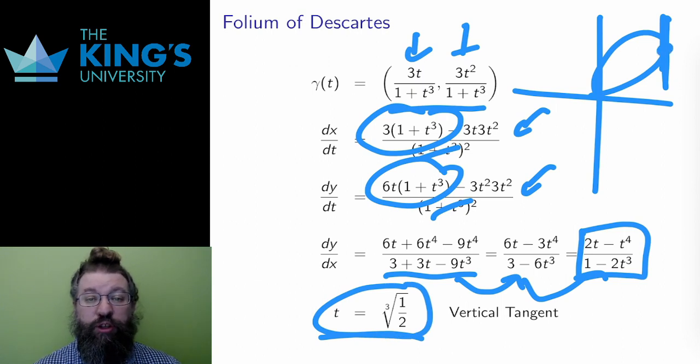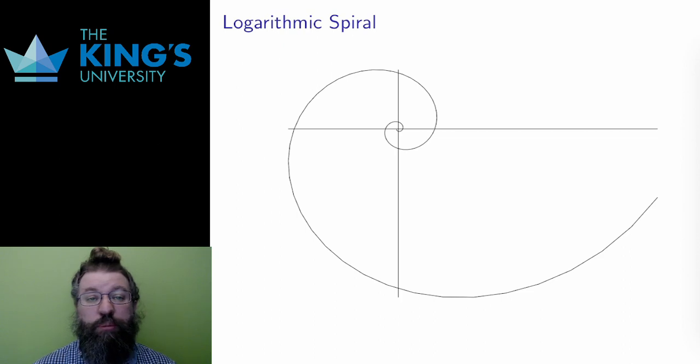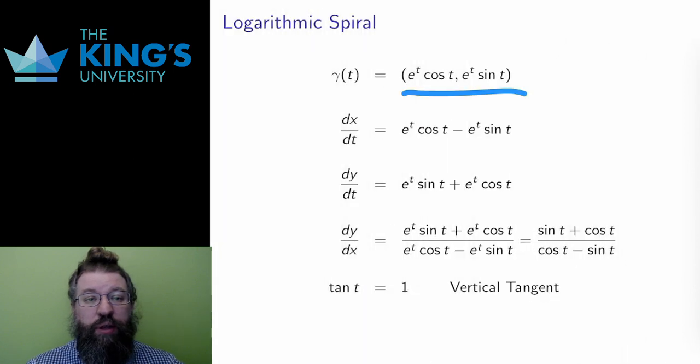Here is another curve to do a slope example. This is the logarithmic spiral. And there are many places where there are vertical tangents, and so I expect the derivative to be undefined at all of these places. Here is the algebraic description of the logarithmic spiral.